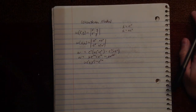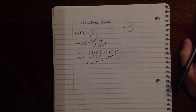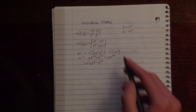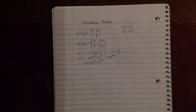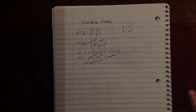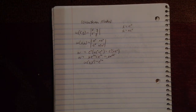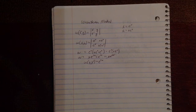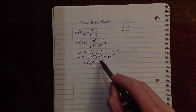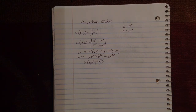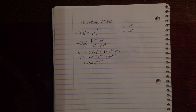Okay, and what does this tell us? Well, this tells us that these two functions are linearly independent. The exact definition is: y1 and y2 are linearly independent if and only if the Wronskian does not equal zero. And this clearly does not equal zero. If the Wronskian does equal zero, then they are dependent on each other.